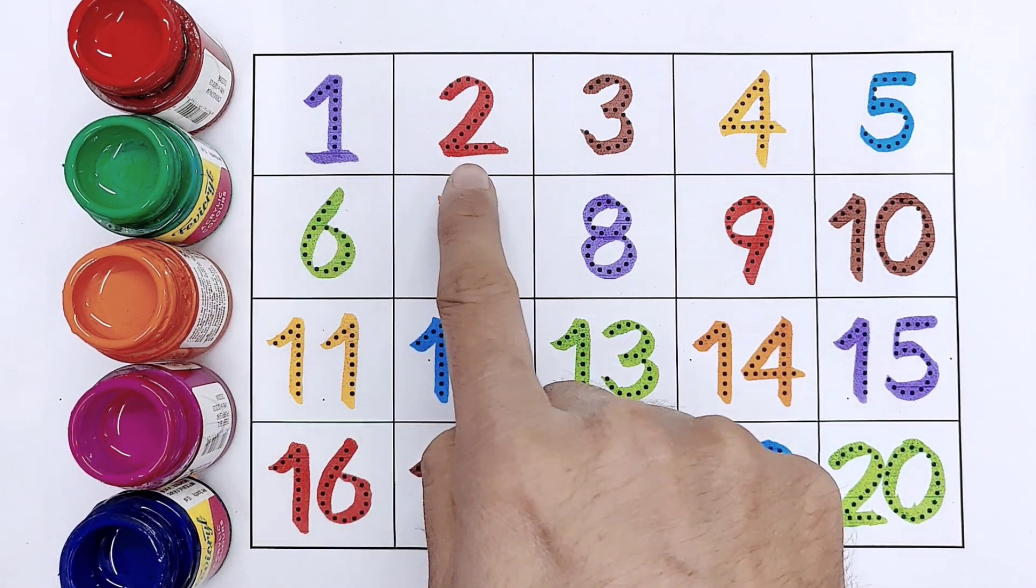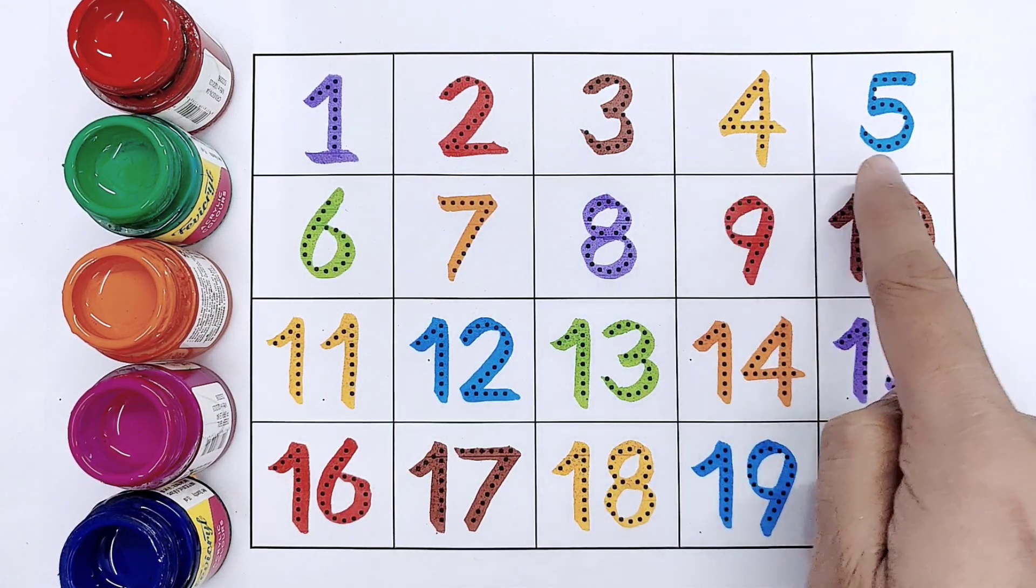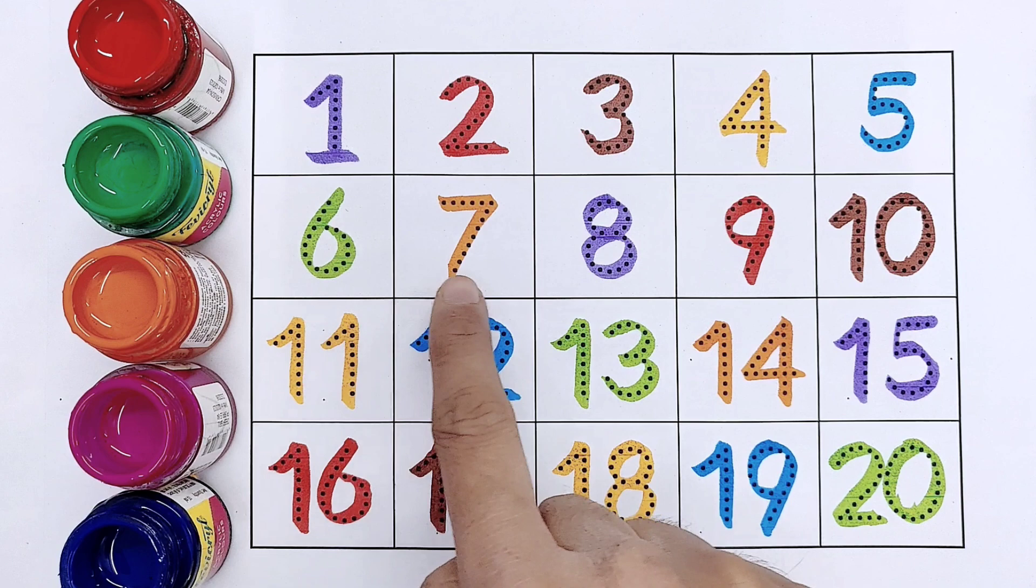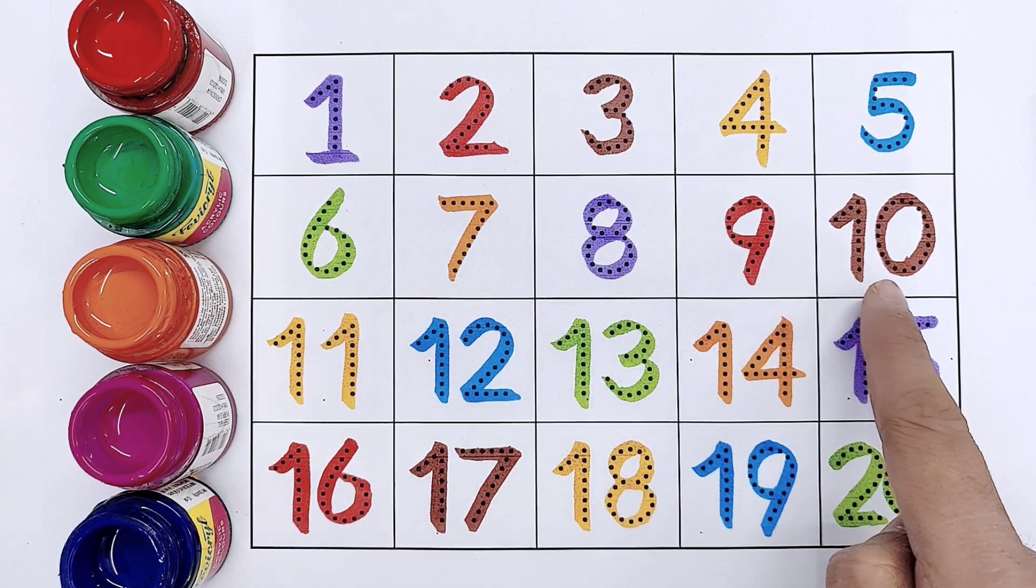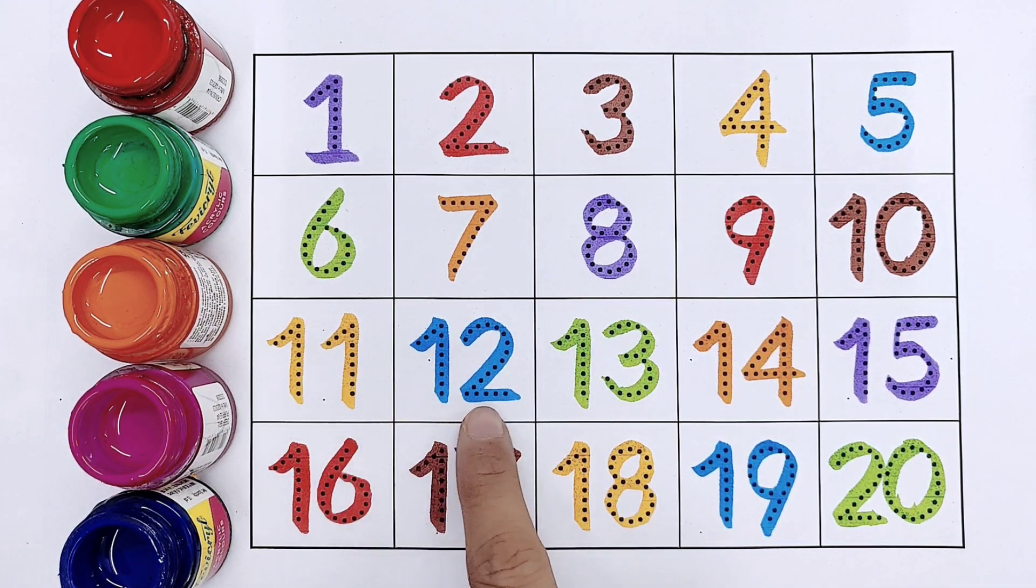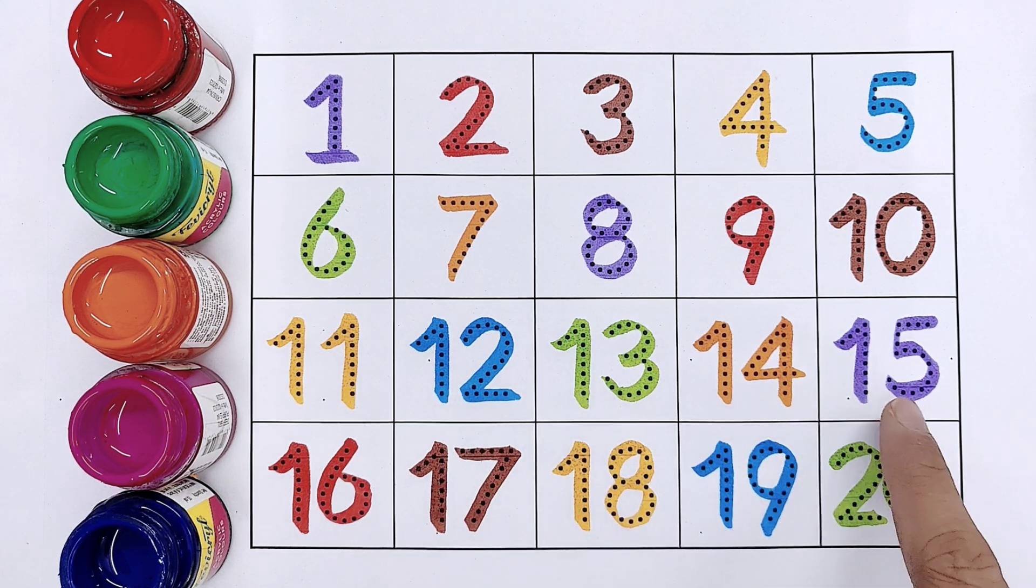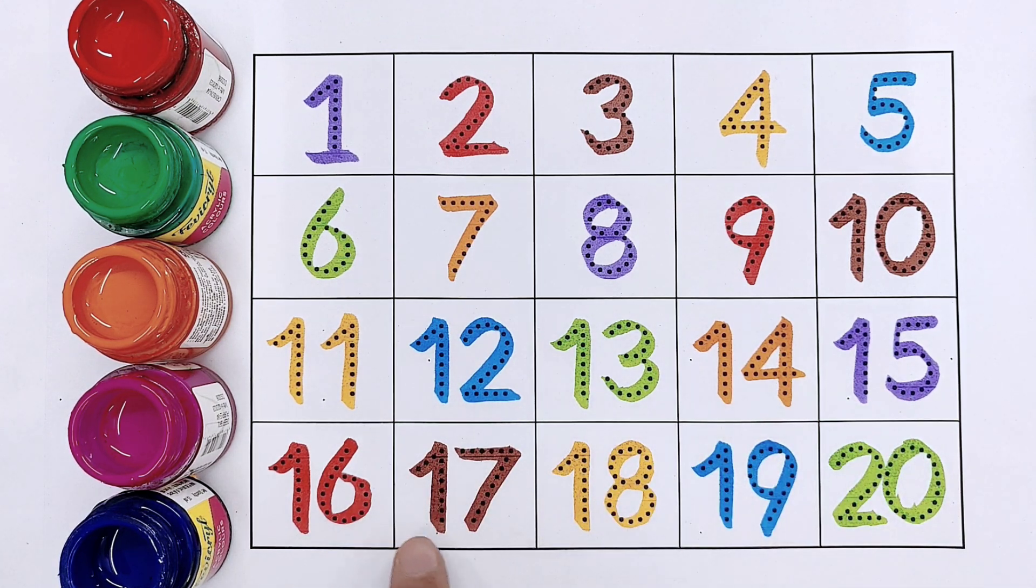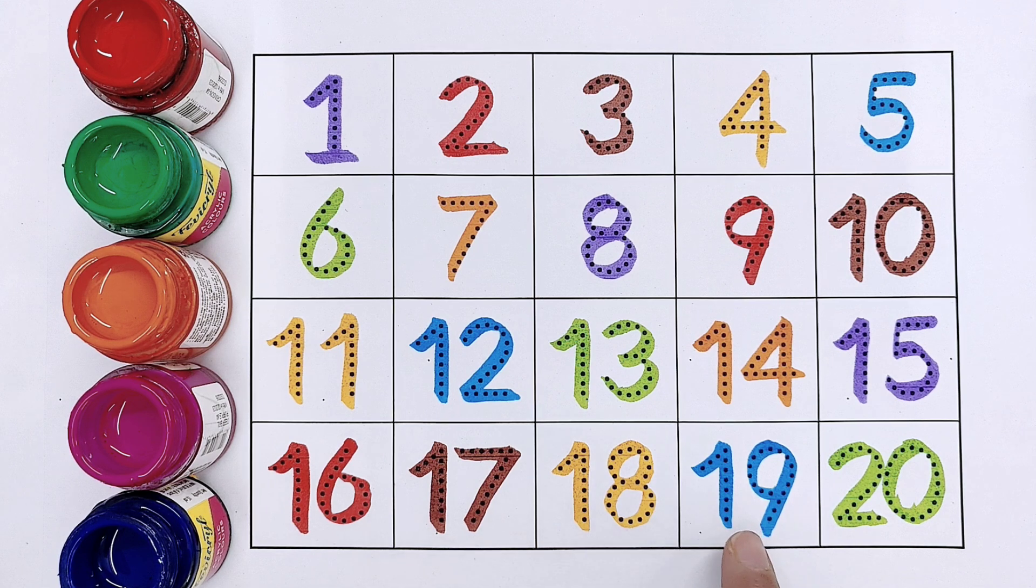One, two, three, four, five, six, seven, eight, nine, ten, eleven, twelve, thirteen, fourteen, fifteen, sixteen, seventeen, eighteen, nineteen, twenty.